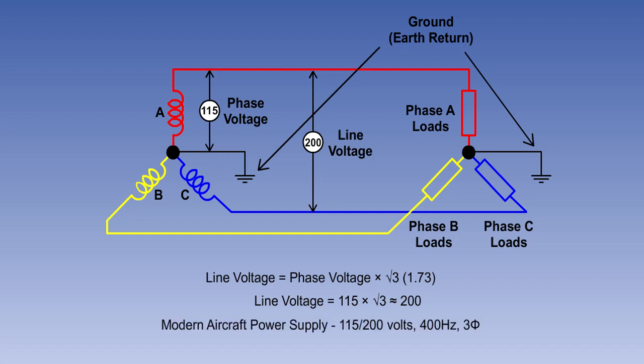The frequency used on aircraft is normally 400 hertz. So a modern aircraft power supply would be 115/200 volts, 400 hertz, three phase. The Greek letter phi is often used to represent phase.